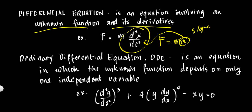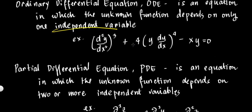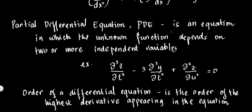We have two types. The first is the Ordinary Differential Equation, or ODE. An ODE is an equation in which the unknown function depends on only one independent variable. For example: the second derivative of y with respect to x, raised to 3, plus 4 times y times dy/dx raised to 4, minus xy equals 0. Here the unknown function depends only on x.